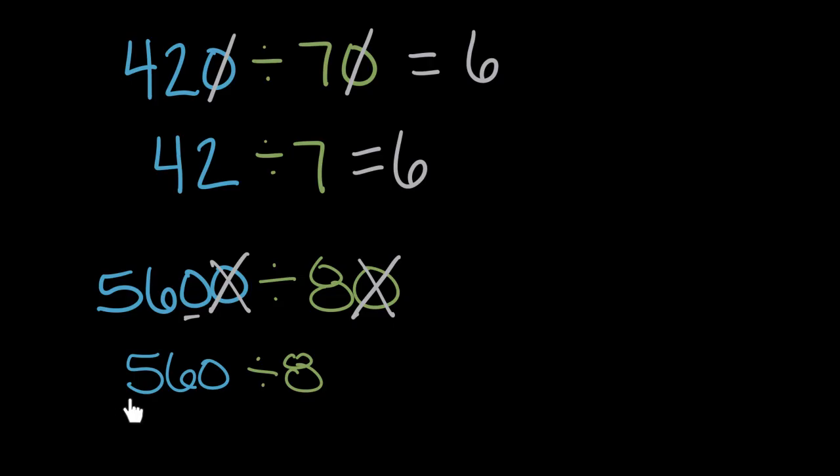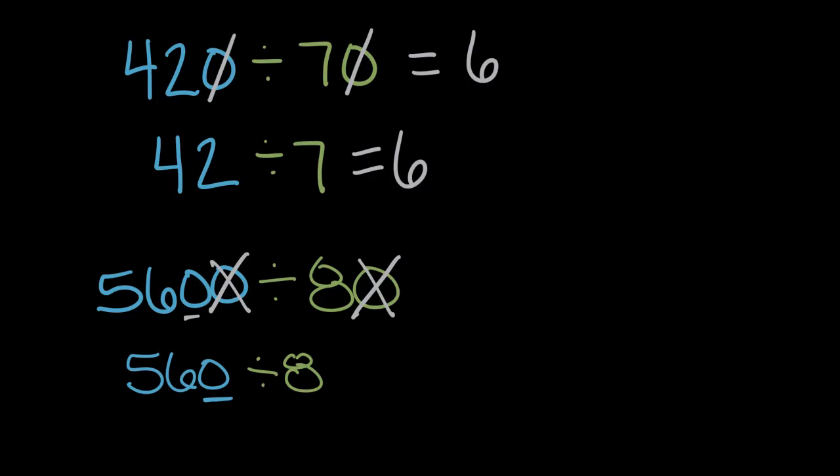This leaves us with a new division problem that's still a little bit tricky, but easier than dividing by 80. So here we can think of 560 as 56 tens because of the zero on the end. And 56 tens or 560 could be rewritten as 10 times 56. These are equivalent, because 10 times 56 is a 56 with a zero on the end.